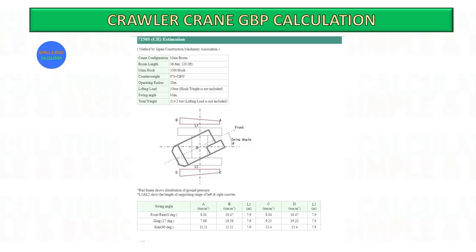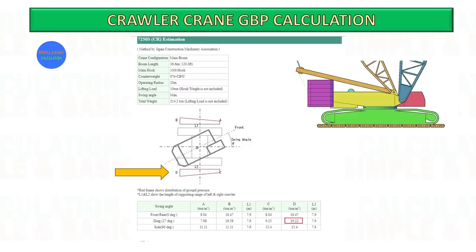In this example we will calculate the required size of crane mats based on the pressure on the track during lifting operation. This data is generated from the crane manufacturer software. Based on the data, the maximum GBP under the track is 19.22 ton per meter squared.